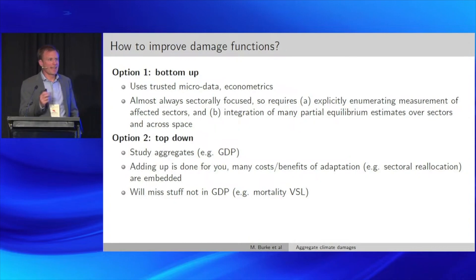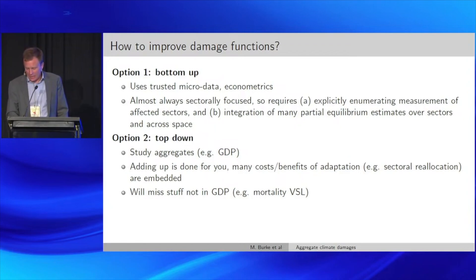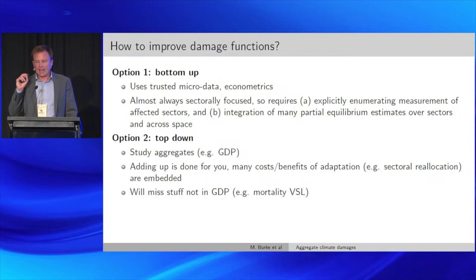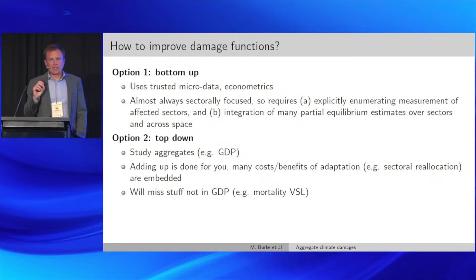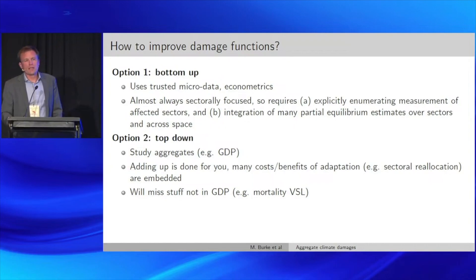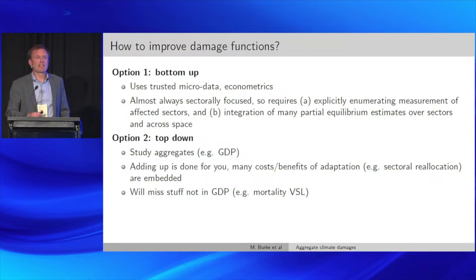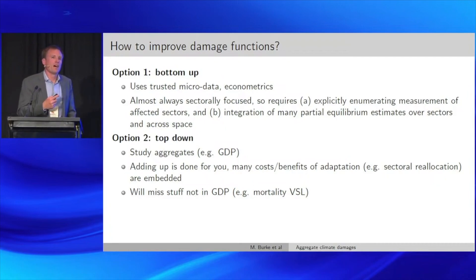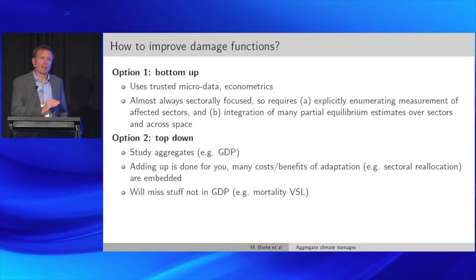I'm going to do something different. Instead of a micro-founded bottom-up approach, we are going to look at impacts in aggregate data — a top-down approach. We'll study economic aggregates directly, and here that means GDP. At the beginning: GDP does not equal welfare, echoing Jim Stock. I'm going to show you how changes in climate have affected GDP over the last 70 years and try to project forward. One benefit: a lot of the sectoral adding-up is done for you.